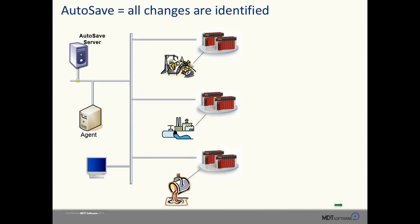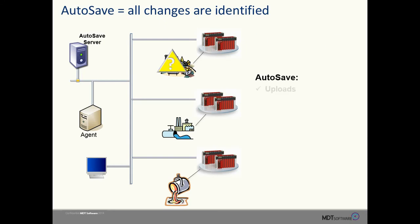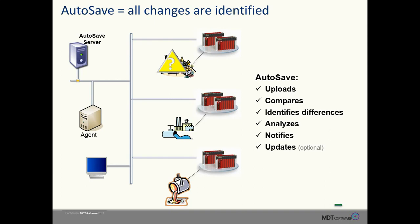Let's replay those scenarios, but with Autosave installed in the facility. The contractor comes in and deploys a change, but Autosave will periodically go out and look for changes that have been made. Autosave will periodically send a copy of the program to an agent, upload a copy from the processor, and perform a comparison. If changes are found, a comparison will be emailed to people you designate.